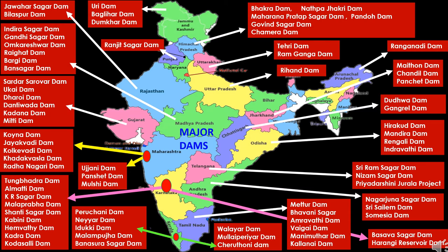In Kerala, first is Pechipparai Dam, located in Kanyakumari district, built on the Paralayar River. Second is Neyyar Dam, built across the Neyyar River in Thiruvananthapuram. Next is Idukki Dam, on the Periyar River in Idukki district. Next is Malampuzha Dam, the largest reservoir, located in Palakkad district. Then Banasura Sagar Dam, built on the Karamanathodu River in Wayanad district. Then Walayar Dam on the Walayar River in Palakkad district. Then Mullaperiyar Dam, across the Periyar River in Idukki district. And Cheruthoni Dam, located in Idukki.